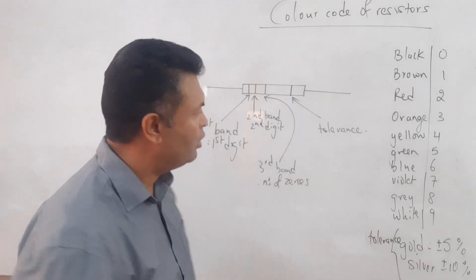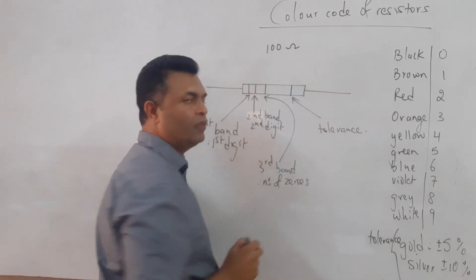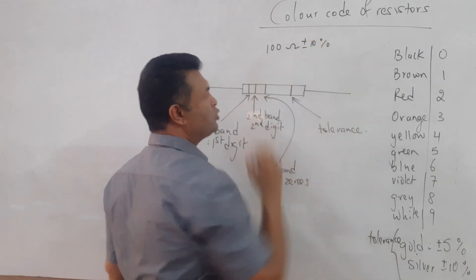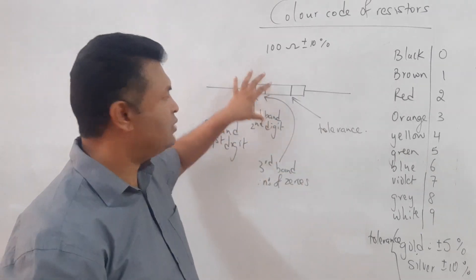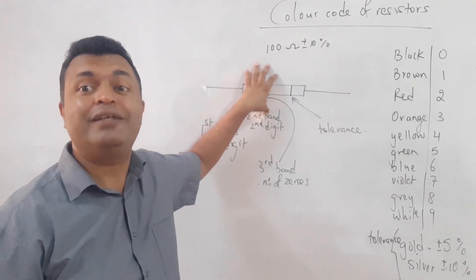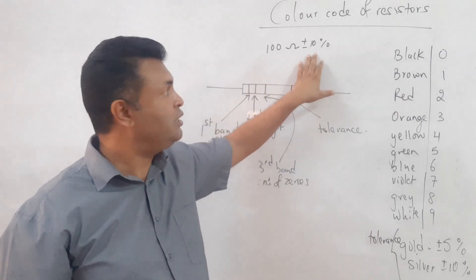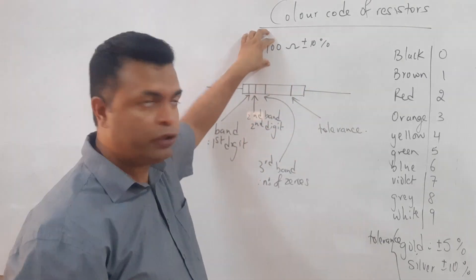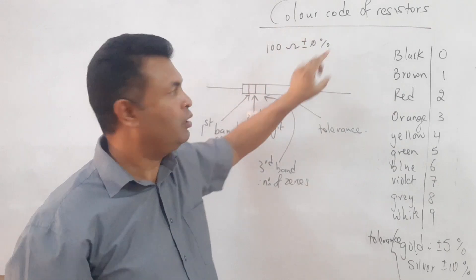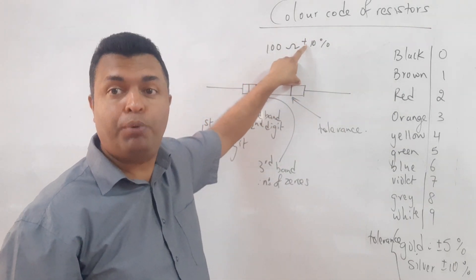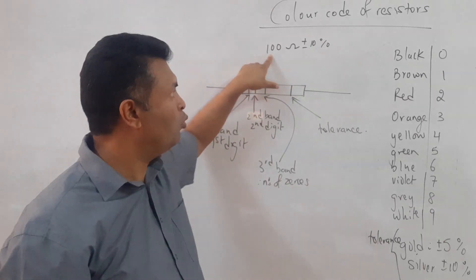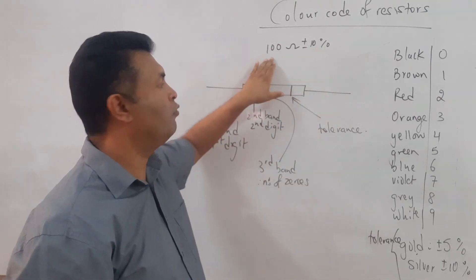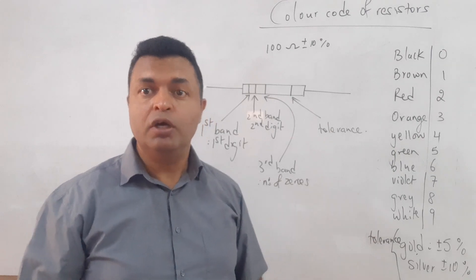For example, if I have a resistor of 100 ohms and its tolerance is 10%, I write plus or minus 10%. This means the resistor has a nominal value of 100 ohms but can vary by 10% — either greater by 10% or smaller by 10%. 10% of 100 gives 10 ohms.